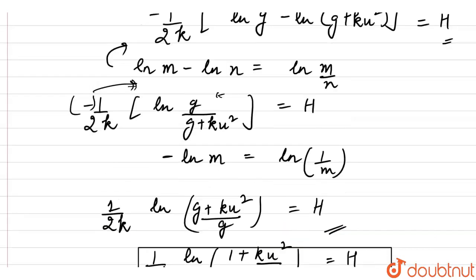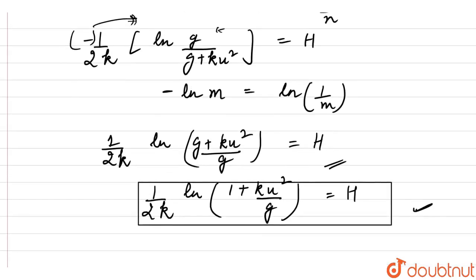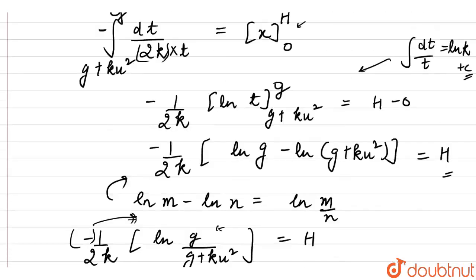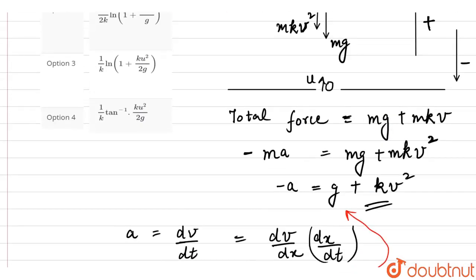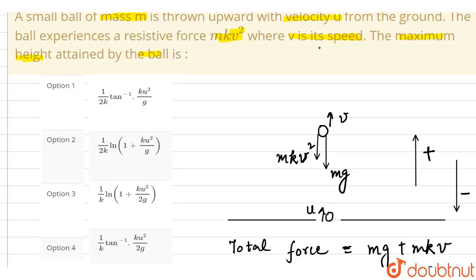Now let's match it with the options. 1 upon 2k ln 1 plus k u squared by g. Our option 2 is correct. 1 upon 2k ln g plus k u squared by g.